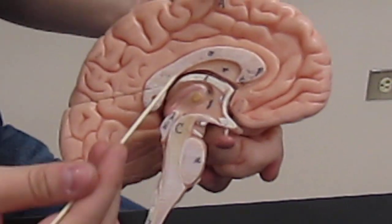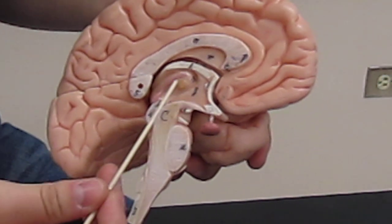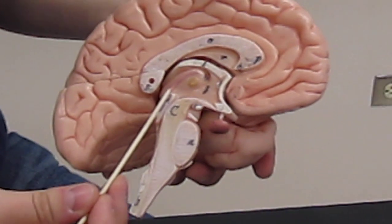The diencephalon is this whole part, composed of the hypothalamus, the thalamus, and the pineal body.